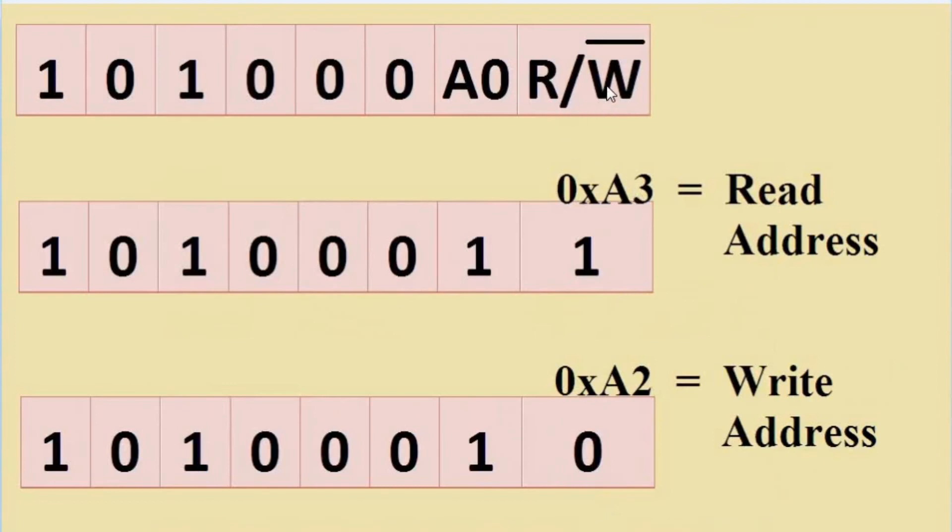If we want to read some data from the slave, the device read address will be A3 and if we want to write data to the slave, this bit will become 0 and hence forming the device address A2.